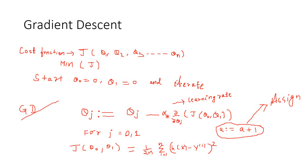Alpha is a learning rate parameter. We will know more about it. And then we take the partial derivative with respect to the parameter — if we have taken theta 1, we will take the partial derivative with respect to theta 1 of the cost function. That is the gradient descent algorithm.